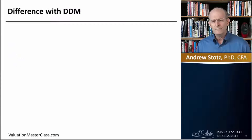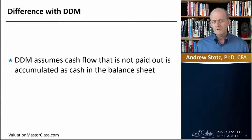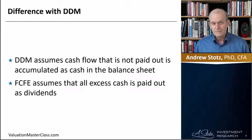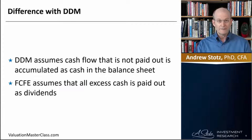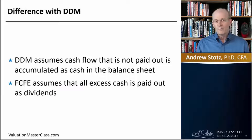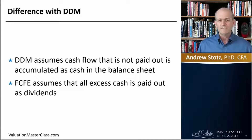So what's the difference with DDM? For the dividend discount model, it assumes that the cash flow that is not paid out is accumulated as cash in the balance sheet. Free cash flow to equity assumes that all cash is paid out as dividend. In that sense, it's a theoretical number rather than a practical number. The practical number is the amount that's being paid out, while free cash flow to equity shows the potential that could be paid out.